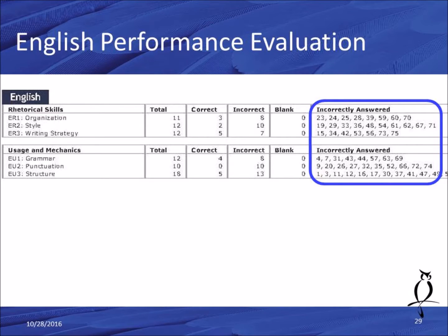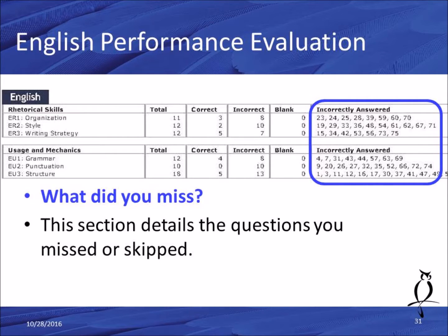The last section on the report is the incorrectly answered section. This helps you answer: what did you miss? If you missed eight questions in organization under rhetorical skills, this section tells you which specific eight you missed. In each section you'll have the same subset column showing details on what you missed or skipped.